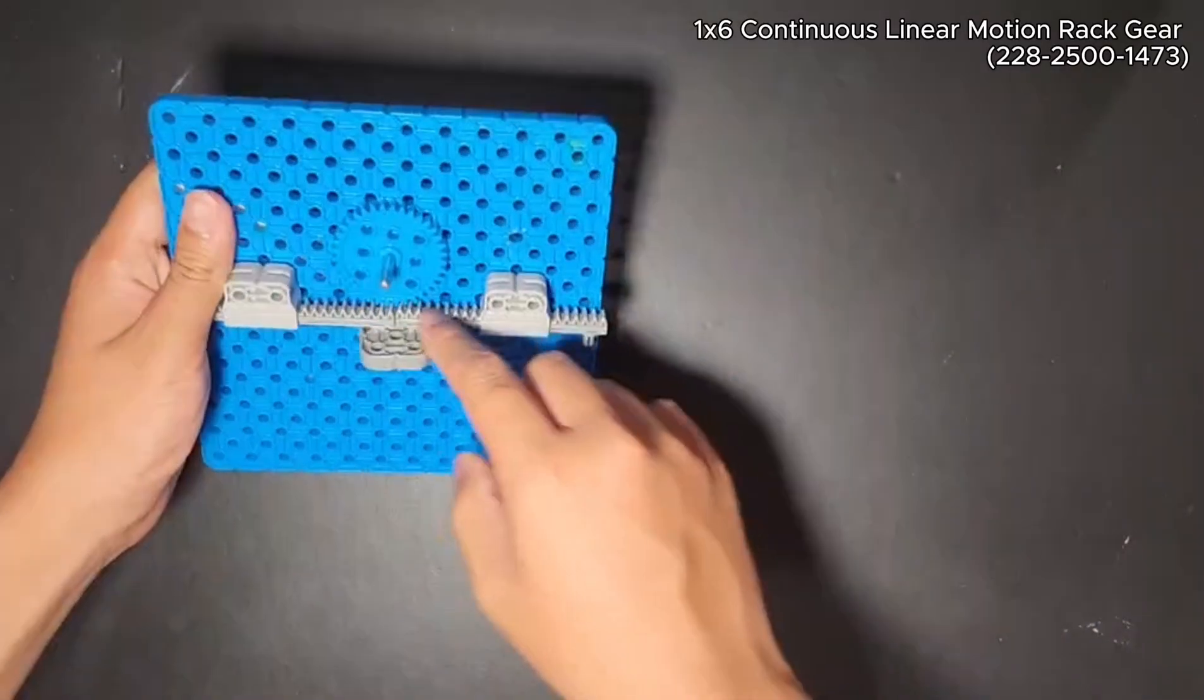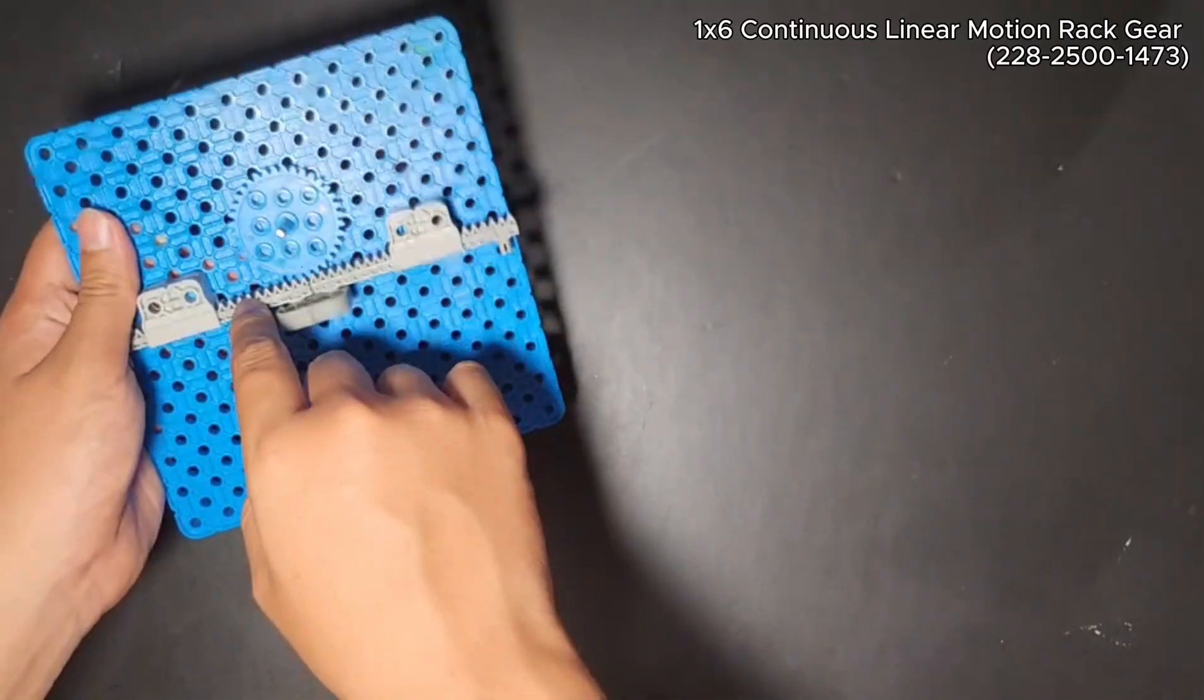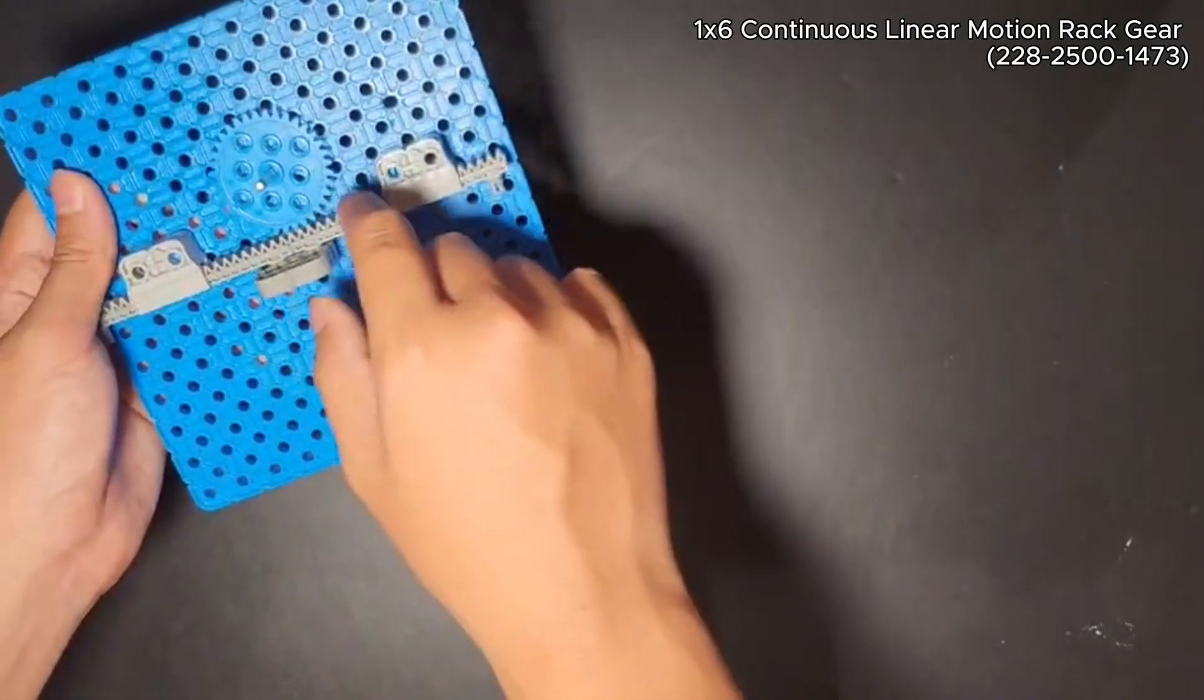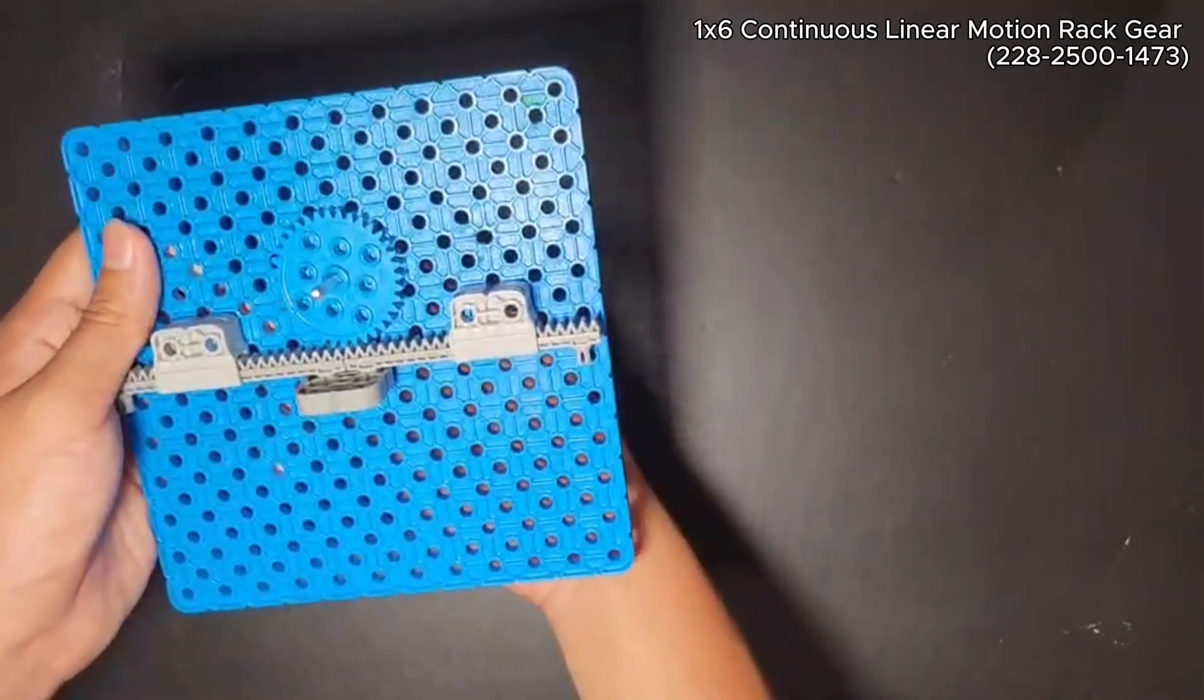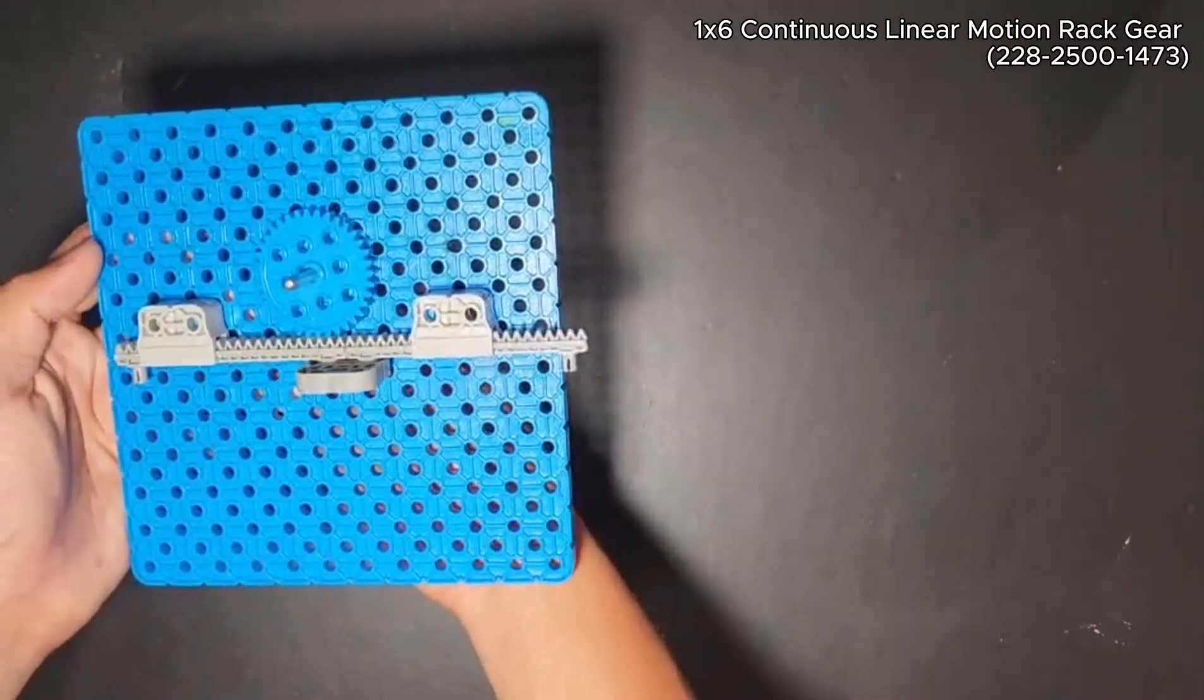Alright, so here we have a new piece. This is called a rack. And what a rack is, it's basically like a long rectangular bar with gear teeth on top. And what this allows us to do is it allows us to convert rotational motion into linear motion.